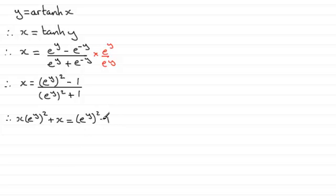And if I add 1 to both sides and subtract this term from both sides, what I end up with is 1 plus x equals e to the y all squared minus x e to the y all squared. And I can pull out a common factor of e to the y all squared, so that just gives me 1 minus x inside.